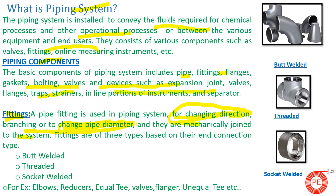Fittings are of three types based on their end connection. One is butt welded — it is simply welded. Another is threaded — threads are cut on both the pipe and the mating part. The third is socket welded. Examples include elbows, reducers, tees, flanges, equal and unequal fittings — all of these help in the movement of fluid from one place to another.